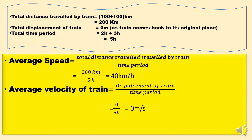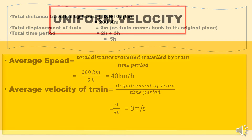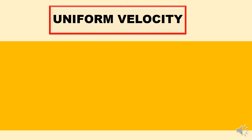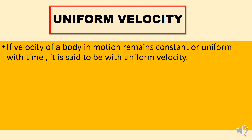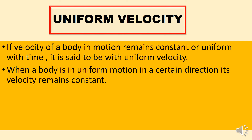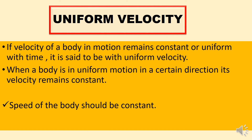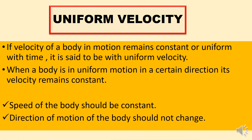I hope the question is clear to all of you. If there is any confusion, kindly ask in the comment section. Uniform velocity is the same as uniform speed. If the velocity of a body in motion remains constant with time — meaning the body moves with the same velocity — it is said to be in uniform velocity. The conditions for uniform velocity are: the speed of the body should be constant, and the direction of motion of the body should not change. So this was the concept of velocity, average velocity, and uniform velocity.